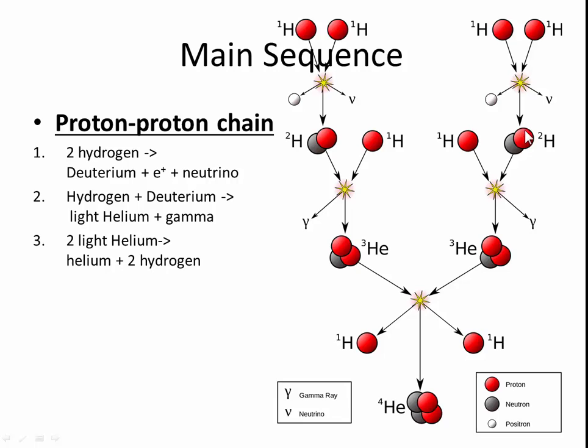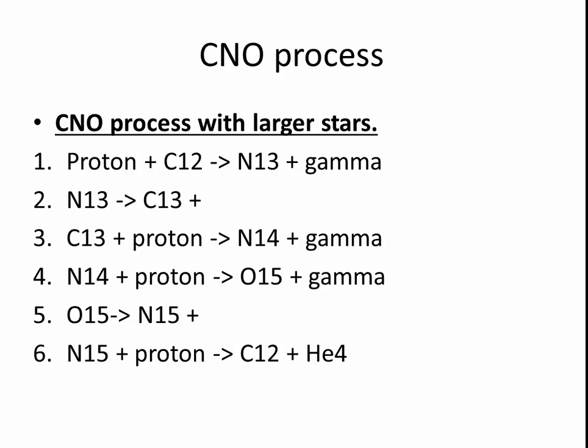This deuterium fuses with another hydrogen, produces a light helium, helium-3. Then two helium-3s combine to make helium-4, and then you produce two hydrogens. You will need to know this.